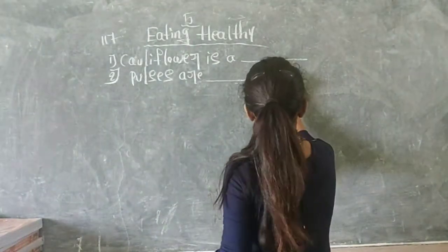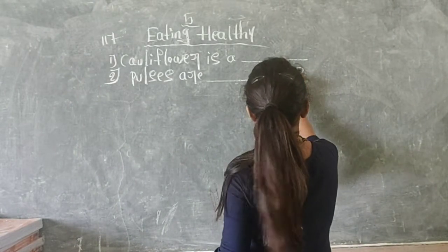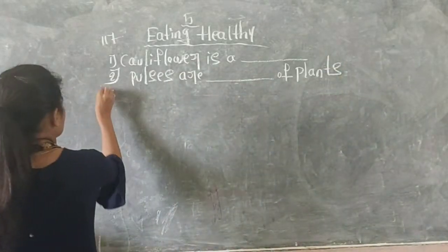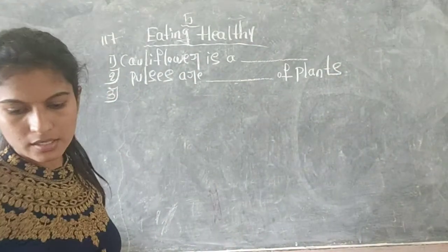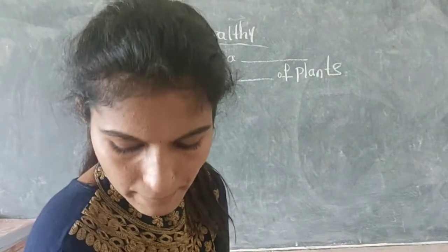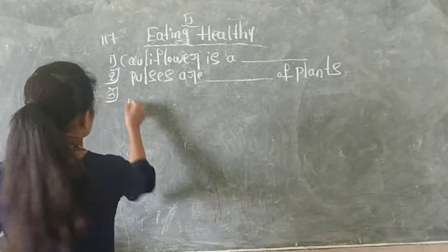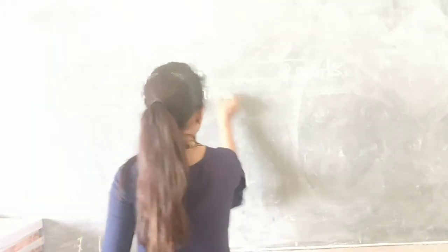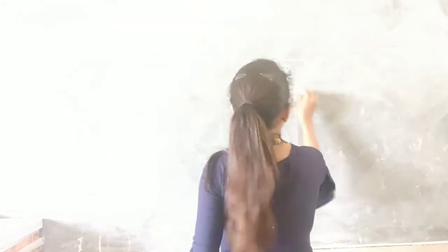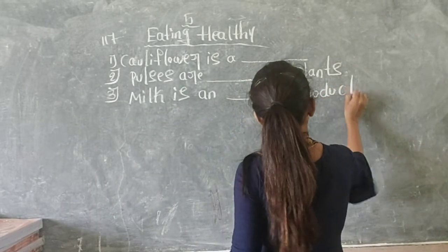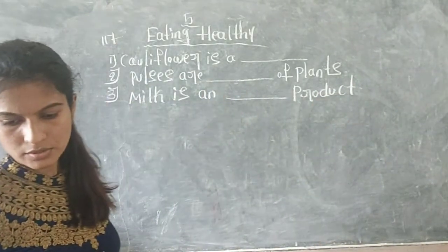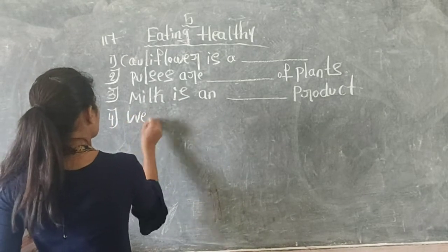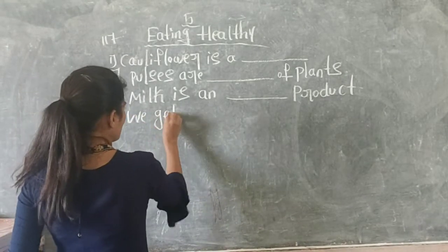Pulses are blank of plants. The third one is: milk is a blank product. The fourth one is: we get most of our food from blank.